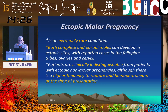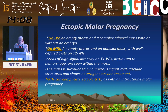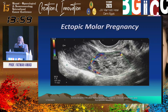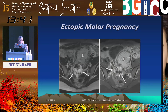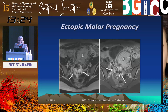Molar pregnancy can happen at ectopic sites — not just intrauterine. Complete and partial moles can occur in the cervix, fallopian tubes, and ovaries, with a higher tendency to rupture and hemoperitoneum at presentation. The uterus will be empty but there will be a cystic adnexal mass with or without an embryo. Beta-HCG will be extremely high. These tumors show mostly peripheral vascularity. On MRI, the ectopic cystic lesion may show T1 high signal from hemorrhage, the uterus is empty, and post-contrast study shows avid enhancement.